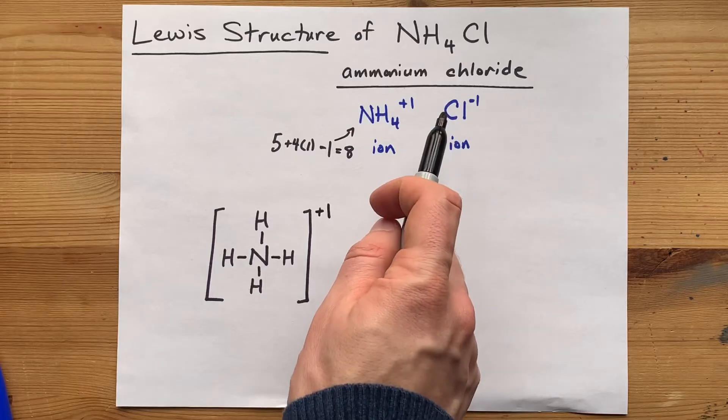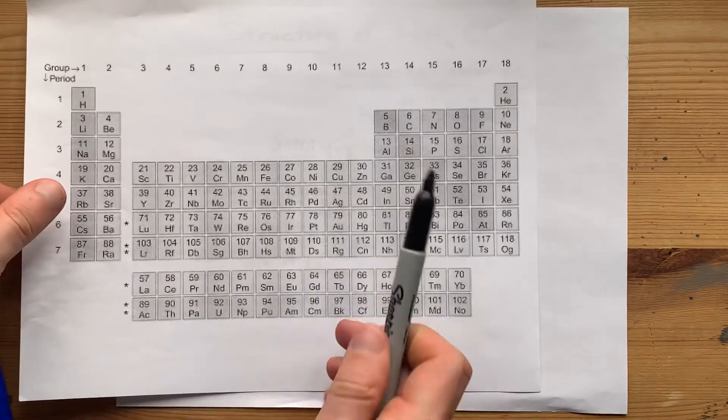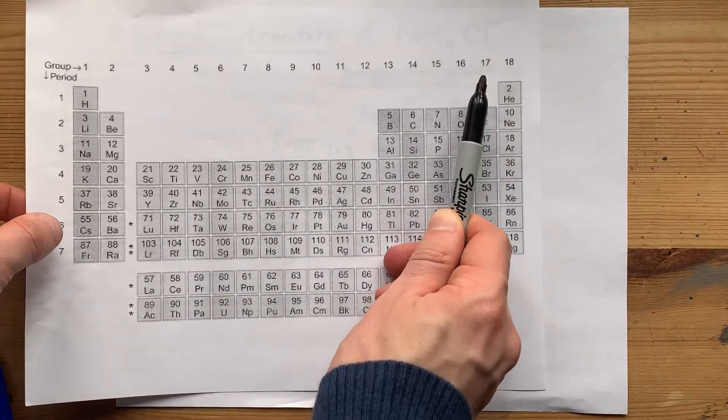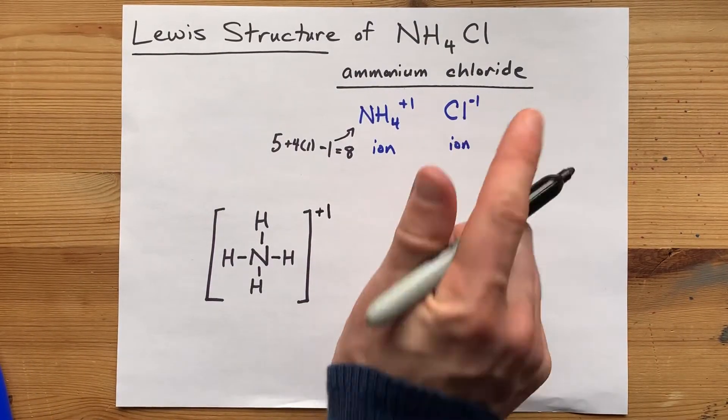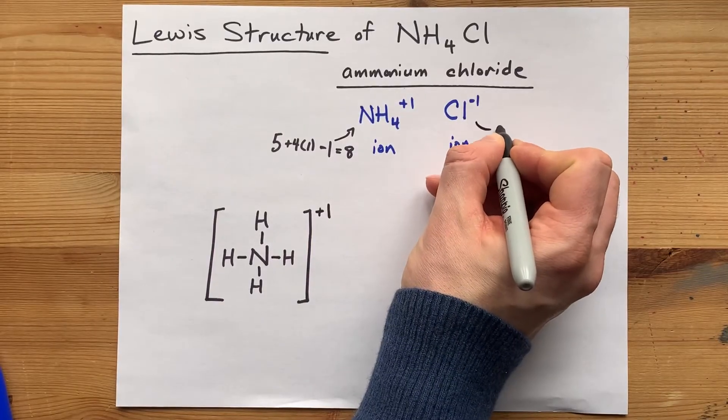Now, there are no bonds here because there's only one atom. Chlorine brings seven valence electrons with it. But with a minus one charge, that means you have one extra.